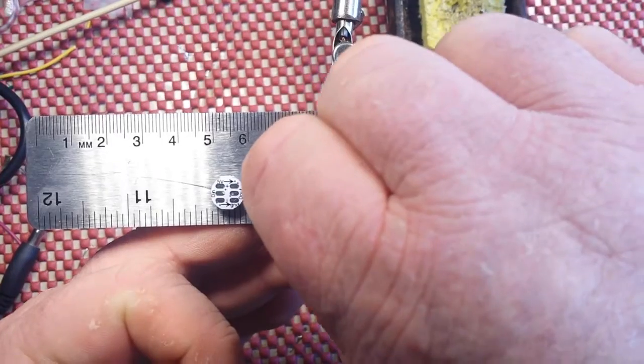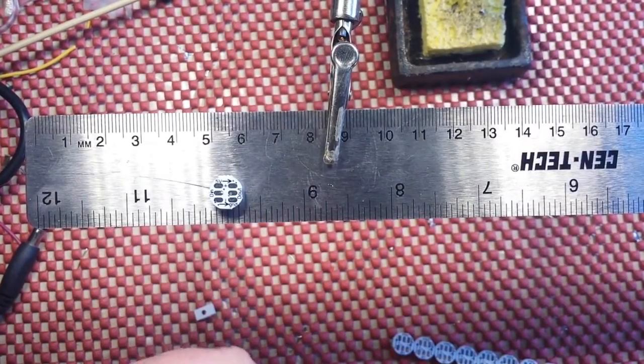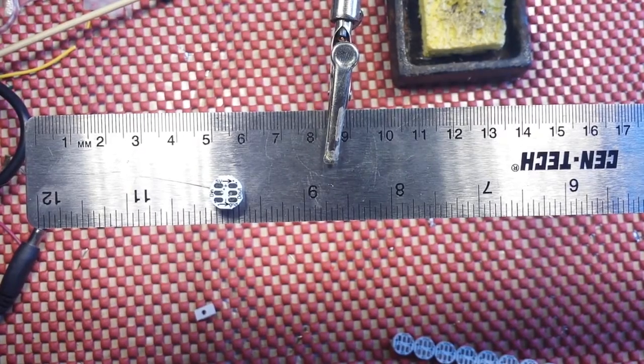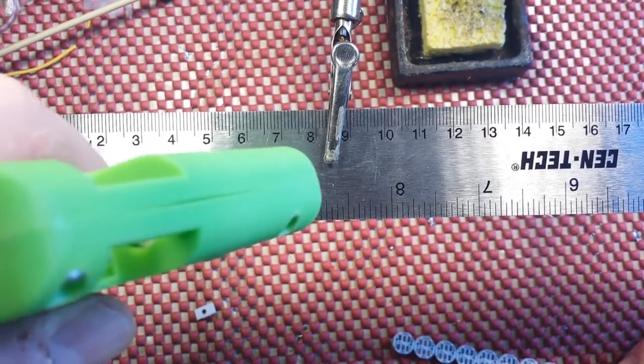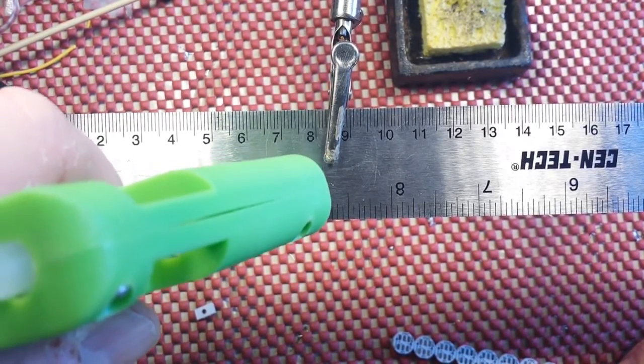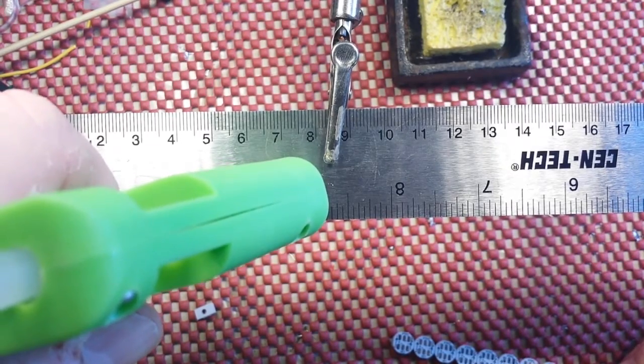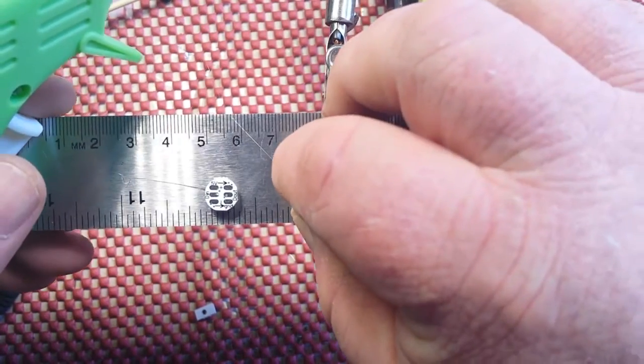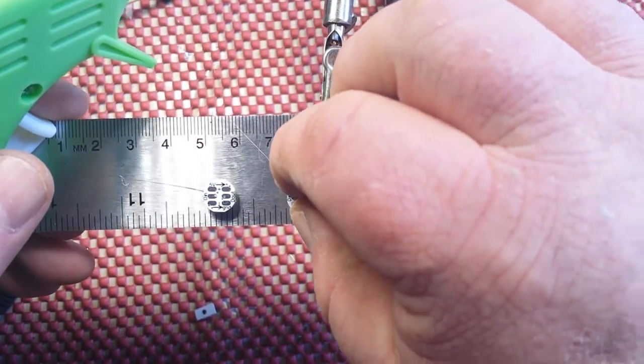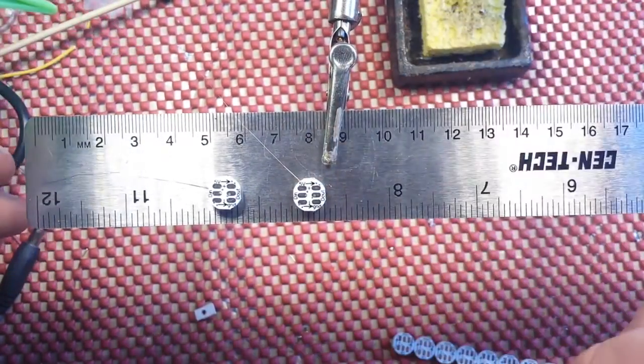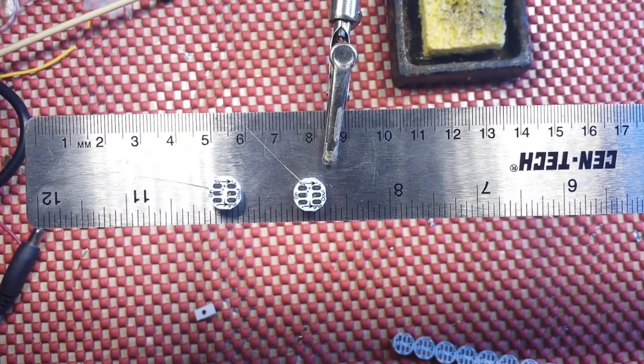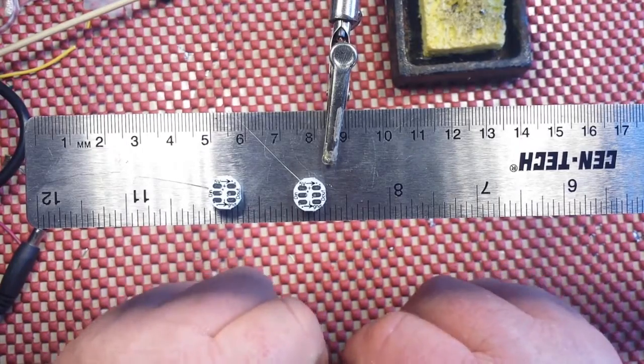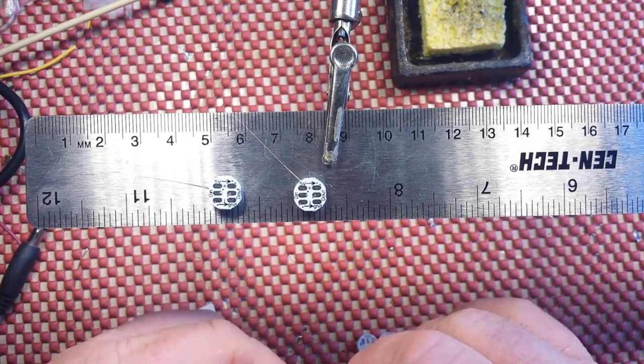See that one was too tiny of a drop and it cooled before it got a chance to stick. Maybe I should have put the ruler in the oven for a few minutes. So I'm going to keep snapping these off here.